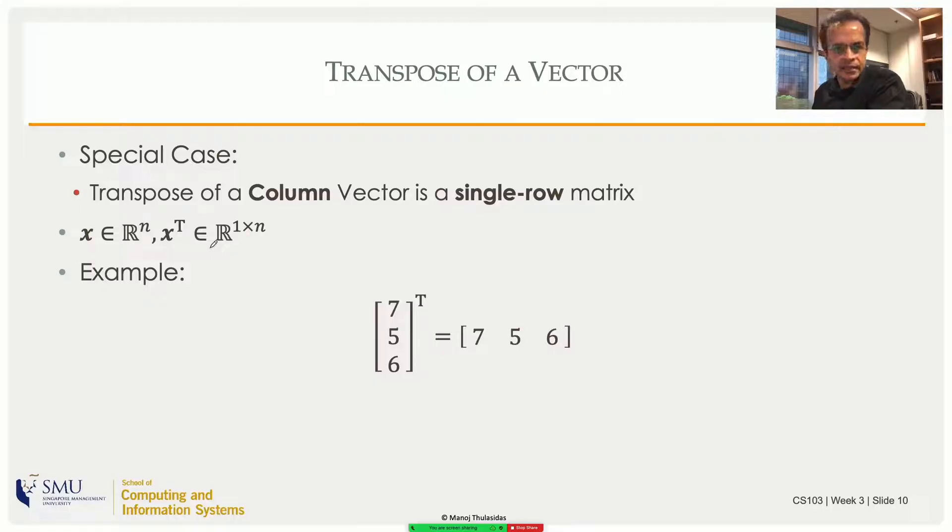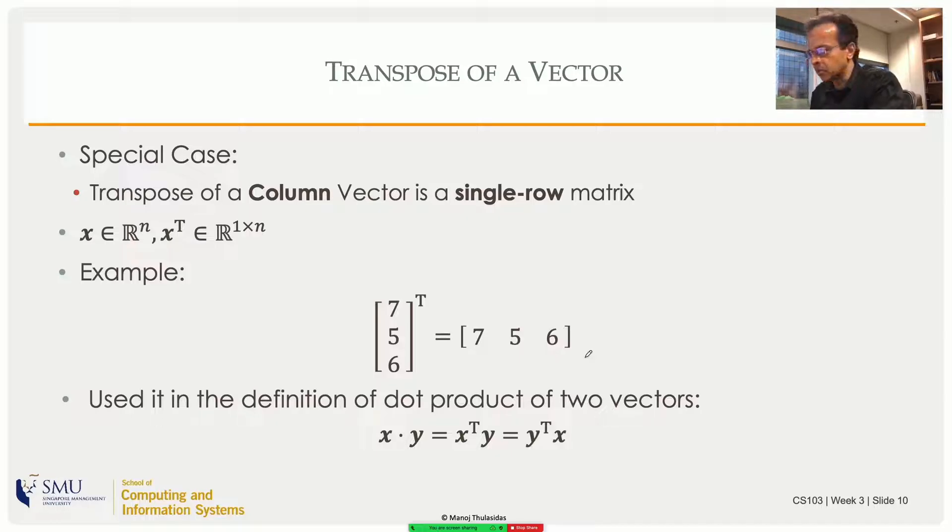Some people might call that a row vector. So here's a column vector, three numbers standing on top of each other, and you ask them to lie down, you get the x transpose. We did use this in the definition of dot product, where we said x dot y is x transpose times y, or y transpose times x.